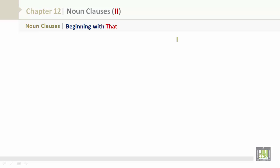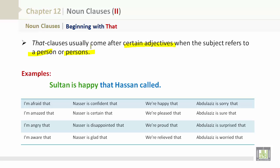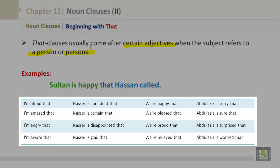That clauses usually come after certain adjectives when the subject refers to a person or persons. For example: 'Sultan is happy that Hassan called.' Other adjective examples include: afraid, amazed, angry, aware, confident, certain, disappointed, glad, happy, pleased, proud, relieved, sorry, sure, surprised, and worried.